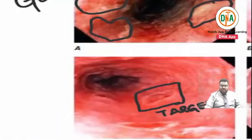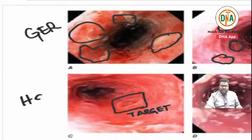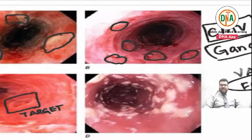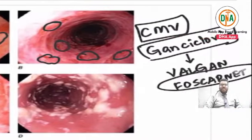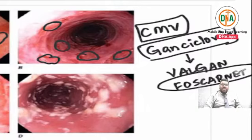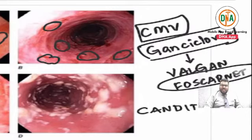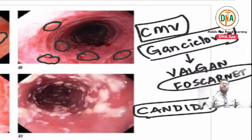The next diagnosis is very simple - even UG students can answer. Friable, whitish white plaques - multiple white plaques in an elderly person, malnourished person, diabetic person, pregnant lady, or any immunocompromised host - the answer is Candida, esophageal candidiasis. Esophageal candidiasis can be treated with Fluconazole as the drug of choice.